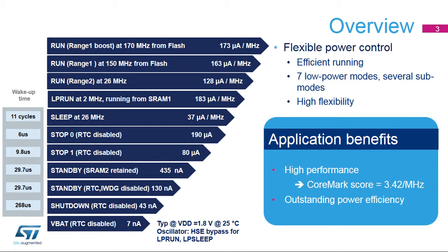Run mode can support a system clock running at up to 170 MHz with only 173 microamps per MHz. At 26 MHz, the consumption is even lower, at 128 microamps per MHz.